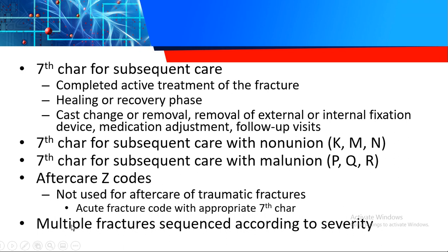For the seventh character in subsequent care — completed active treatment, already in healing phase — common examples include cast change or removal, removal of external or internal fixation device, medication adjustment, and follow-up visits. Additional seventh characters for non-union are K, M, and N; for malunion, P, Q, and R. After-care Z codes apply when the condition is no longer present or the fracture is already healed. For multiple fractures, code first the highest according to severity and anatomical location.